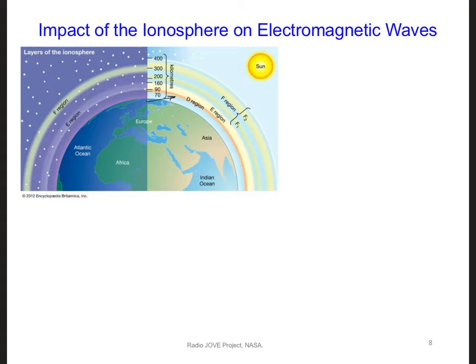Ionized means that there are lots of free electrons and charged ions in that region of the atmosphere. As you can see here, the ionosphere has many layers to it. The characteristics of these layers depend on the time of day as well as solar conditions.